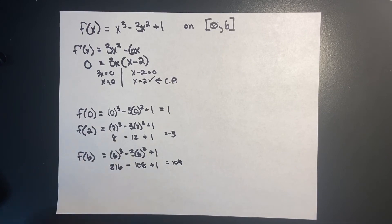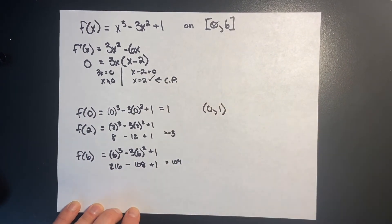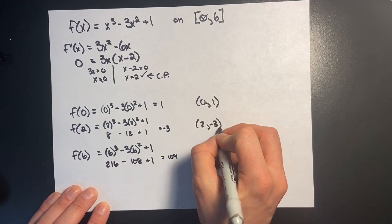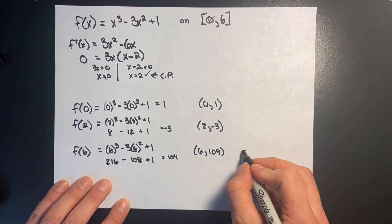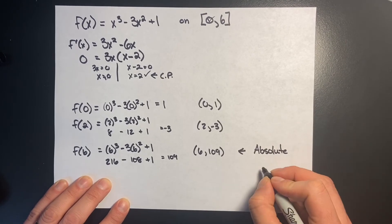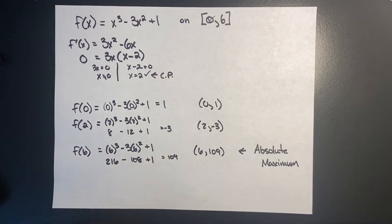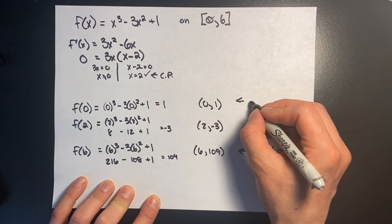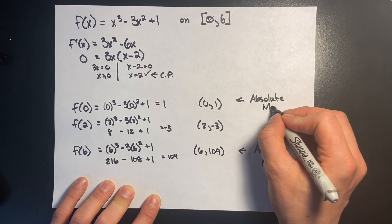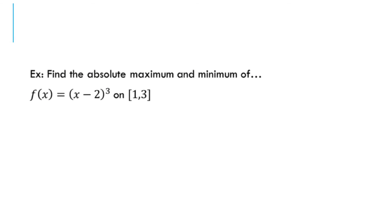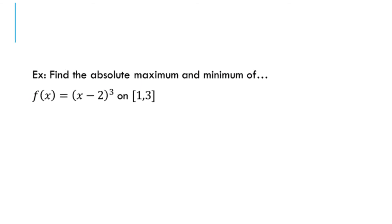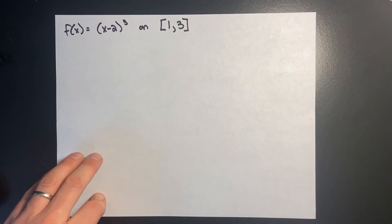When I plugged in 0, I got 1 — that's the point (0, 1). When I plugged in 2, I got −3 — that's the point (2, −3). When I plugged in 6, I got 109 — that's the point (6, 109). The largest value is 109, so (6, 109) is my absolute maximum. The point (0, 1) is the absolute minimum, and (2, −3) is a relative extremum of some kind.